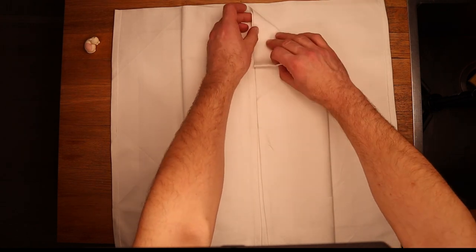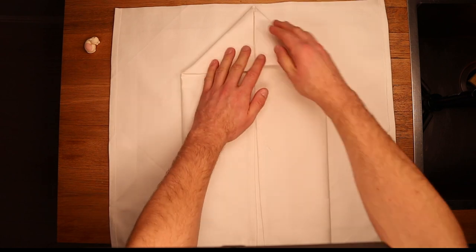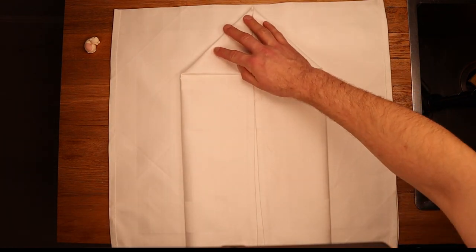Place your finger at the center of the top edge and fold down the right side and left side as seen. I'm using a folding bone to fortify the edges.